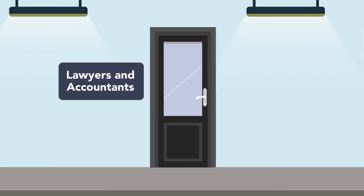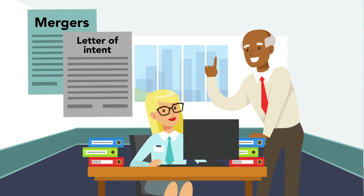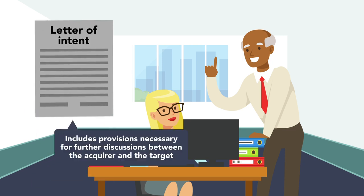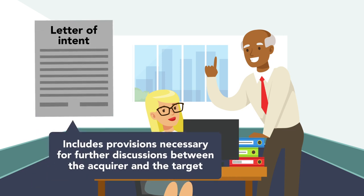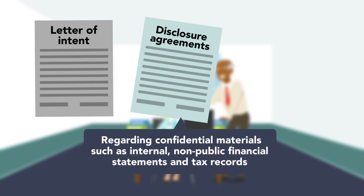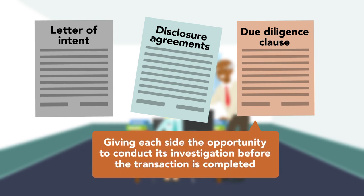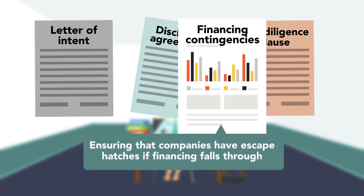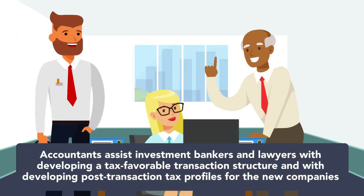Two: lawyers and accountants. Lawyers and accountants specializing in mergers and acquisitions will be needed early in the process. After identifying a target company, a lawyer will prepare a letter of intent, which includes provisions necessary for further discussions between the acquirer and the target. These provisions may include disclosure agreements regarding confidential materials such as internal, non-public financial statements and tax records, a due diligence clause giving each side the opportunity to conduct its investigation before the transaction is completed, and financing contingencies ensuring that the companies have escape hatches if financing falls through. Accountants assist investment bankers and lawyers with developing a tax-favorable transaction structure and with developing post-transaction tax profiles for the new companies.